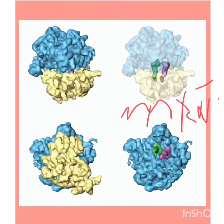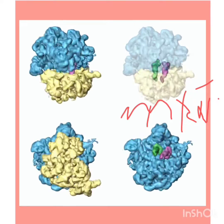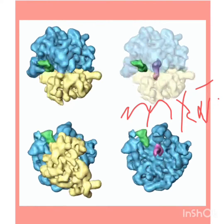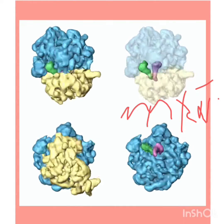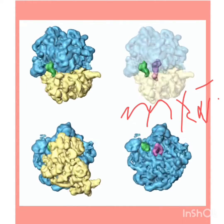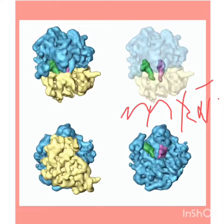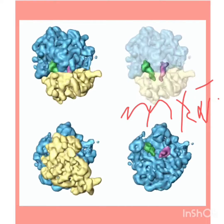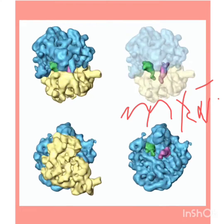What is the scientific name of ribosomes? The scientific name is ribonucleoprotein. Who has the bigger ribosomes? The eukaryotic ribosomes are the bigger ones.